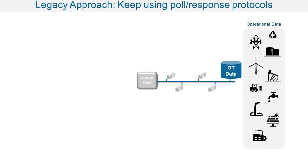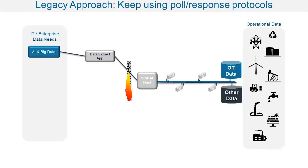But in a digital transformation world, we have IT and enterprise data needs. They may require information for analytics and big data that we're not polling for today. So now we've got to go to operations and say, please poll for information that you don't really need, because you're connected to the devices in the field and therefore must issue the poll for that information. We do that, and we add the firewalling and maybe the applications that we need.